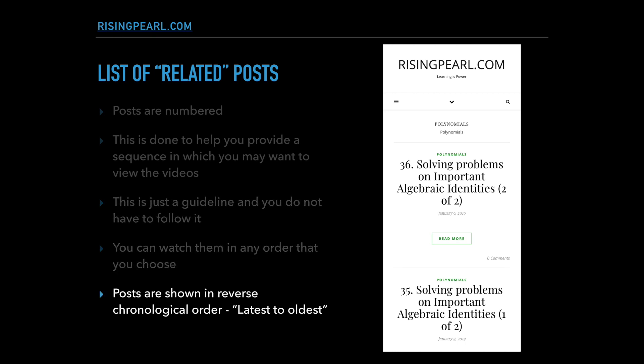One final thing to mention is that the posts are arranged in reverse chronological order. For example, looking at all posts under Polynomials, it shows post 36 at the top, followed by 35, then 34, 33, 32, and so on, with post number one at the very end. So it shows you the most recent post first and the oldest post last.